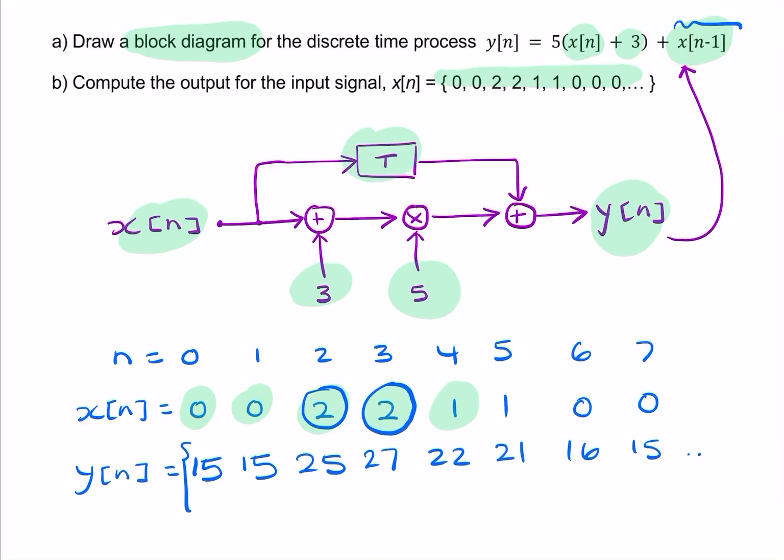So here we found the first few values of the output given the input signal and the difference equation. We don't have an impulse response, we don't have a transfer function, we didn't even have a block diagram. All we had was the difference equation, and we used that to find the first few values of the output y. If necessary, we could sketch that or plot these values. So here we have our final answer.